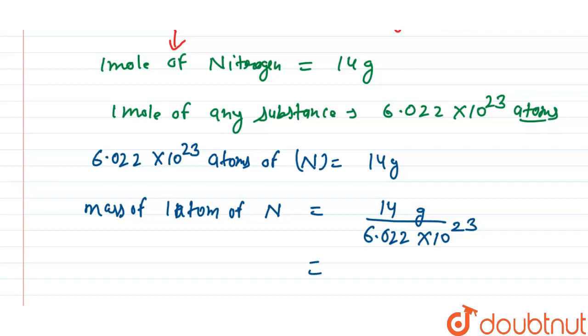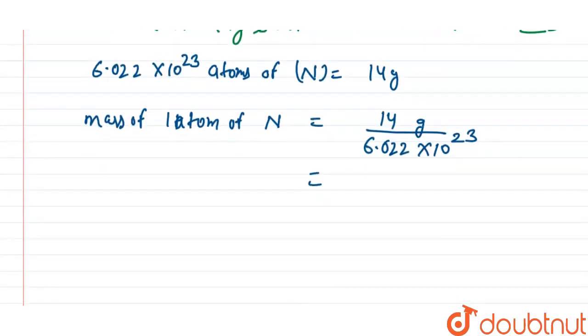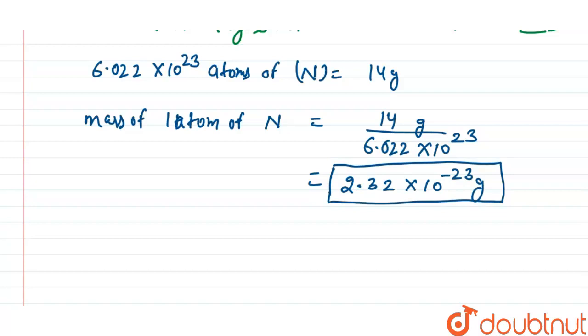By calculating this value, we get 2.32 × 10^-23 grams, which is the mass of one atom of nitrogen.